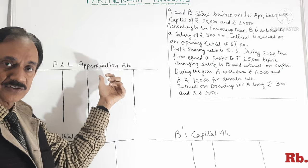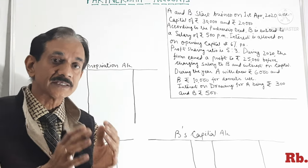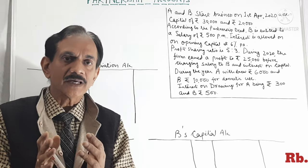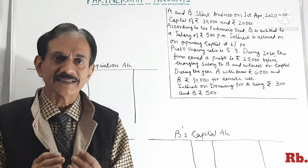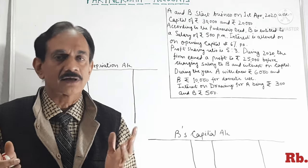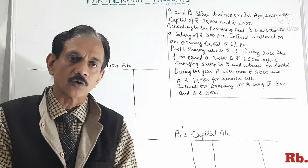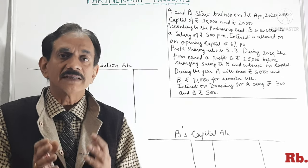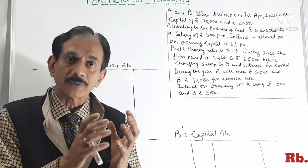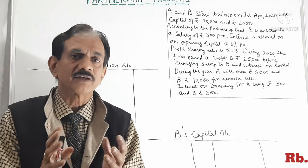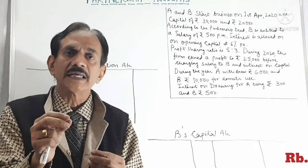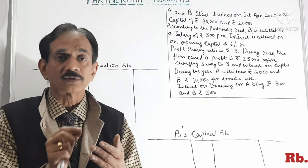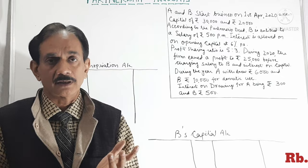That is why we prepare the P&L Appropriations Account, also called the P&L Distributions Account. Another difference is that in sole proprietorship, we maintain only one capital account for the single individual investor. But in case of a partnership firm, separate capital accounts are prepared for each partner. For example, if there are three partners A, B, and C, then there will be three capital accounts: A's capital account, B's capital account, and C's capital account.